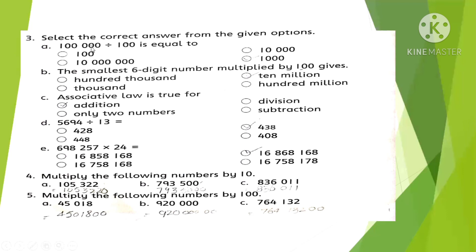Question 3: Select the correct answers. Dividing a number by 100 — two zeros cancel — this option is correct. The smallest six-digit number multiplied by 100 gives 10 million. The associative law is true for addition — this option is correct. 55,694 divided by 13 gives 4,284 — this is the correct option. This number multiplied by 24 — the second option is correct.